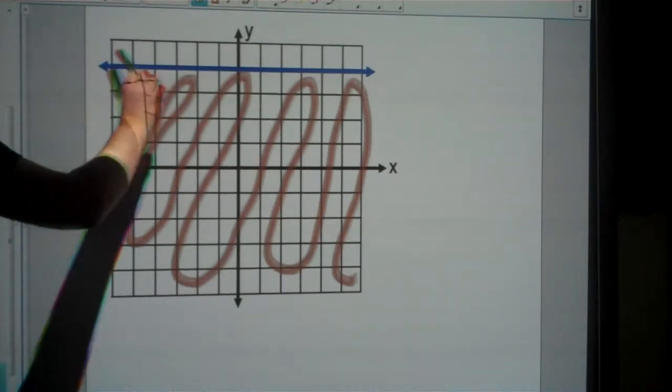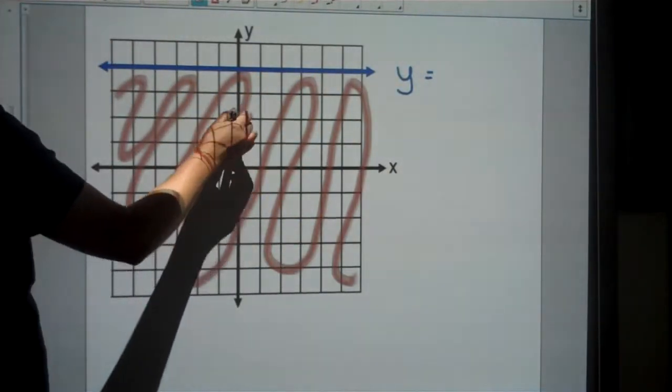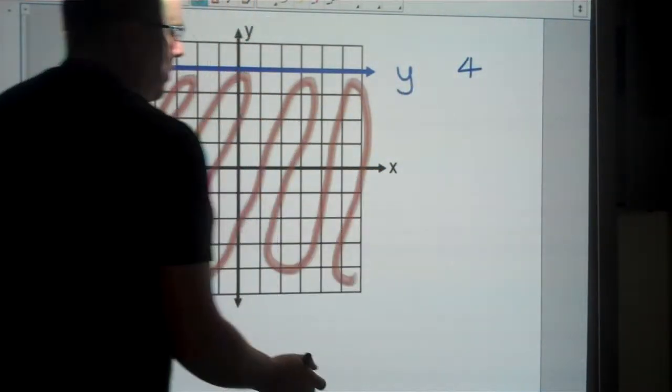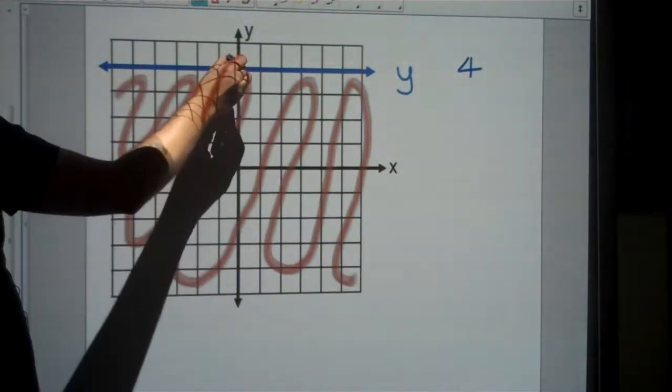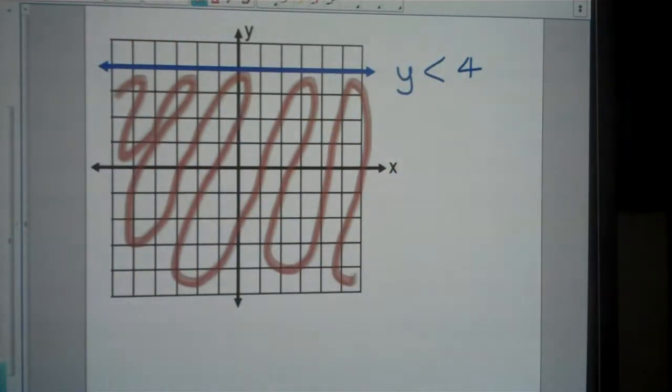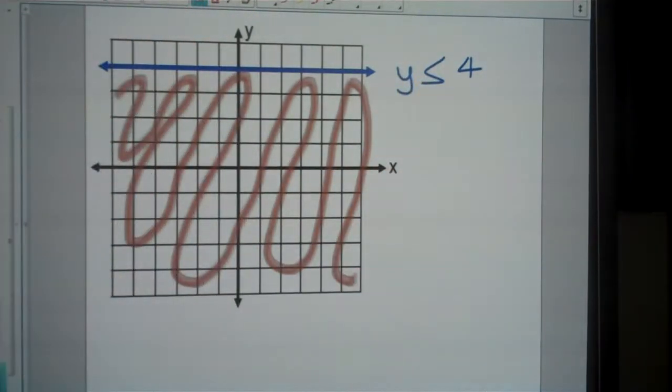Another special case: a horizontal line. This is y equals wherever it goes through - 1, 2, 3, 4. Let's make this an inequality. Since it's below the line, I need less than. Since this is a solid line, I include the equals sign. So y is less than or equal to 4.